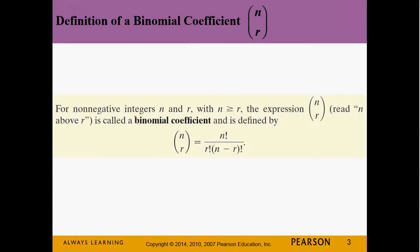Here's the definition of binomial coefficient. For non-negative integers n and r, with n always greater than or equal to r, the expression 'n above r' is called the binomial coefficient, and it's defined as n factorial divided by r factorial times (n minus r) factorial: C(n,r) = n! / (r! × (n−r)!).